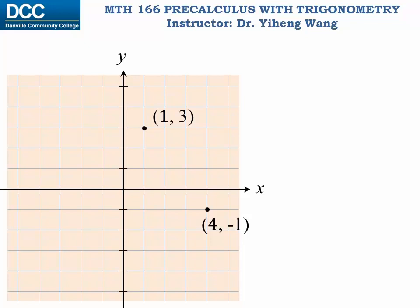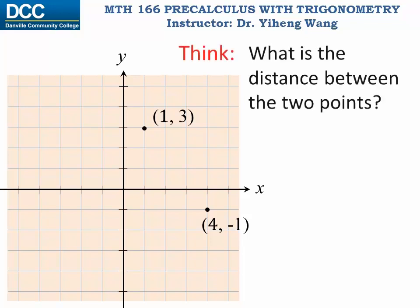On this Cartesian plane there are two points, and their respective coordinates are given. The first point is (1,3), and the second one is (4,-1). How can we determine the distance between these two points?